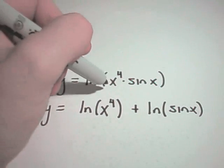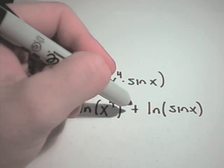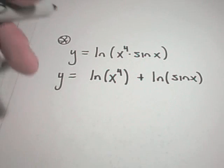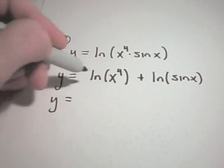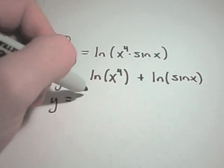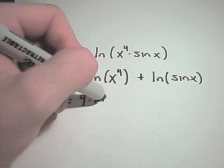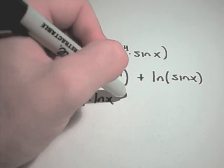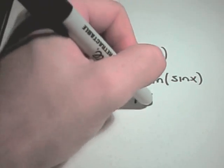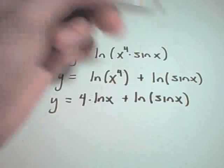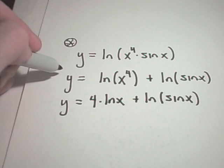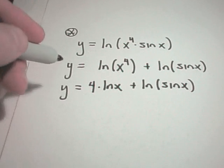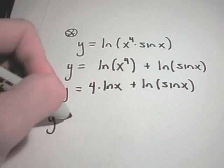I can rewrite ln of x to the 4th times sine x as ln of x to the 4th plus ln of sine x. I could even rewrite this one more time. I can pull the 4 out front and have ln of x. So I haven't taken a derivative yet. I've just used properties of logarithms to bust it up. Now I will take the derivative.